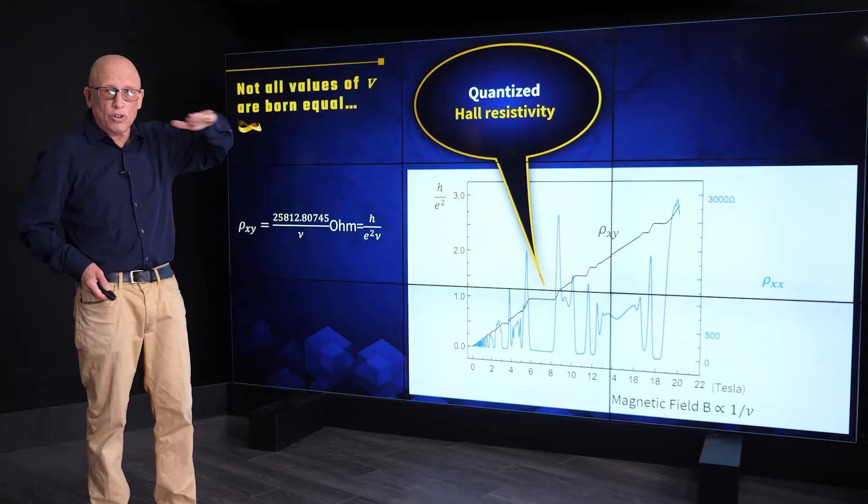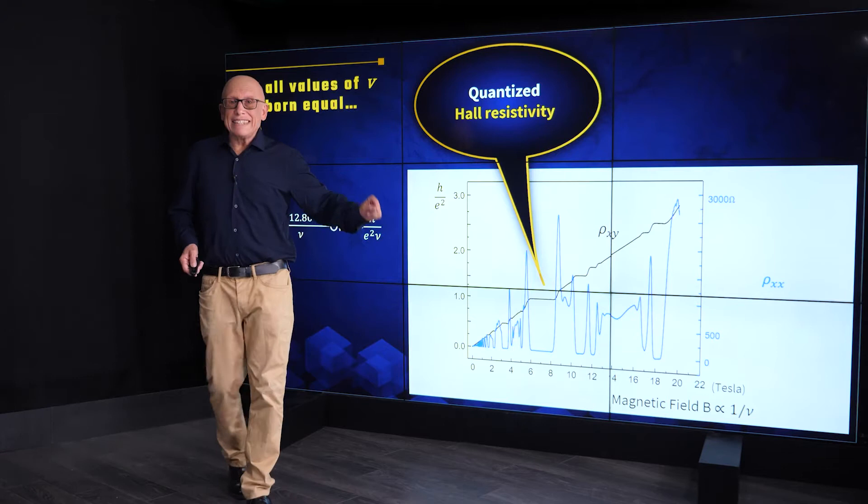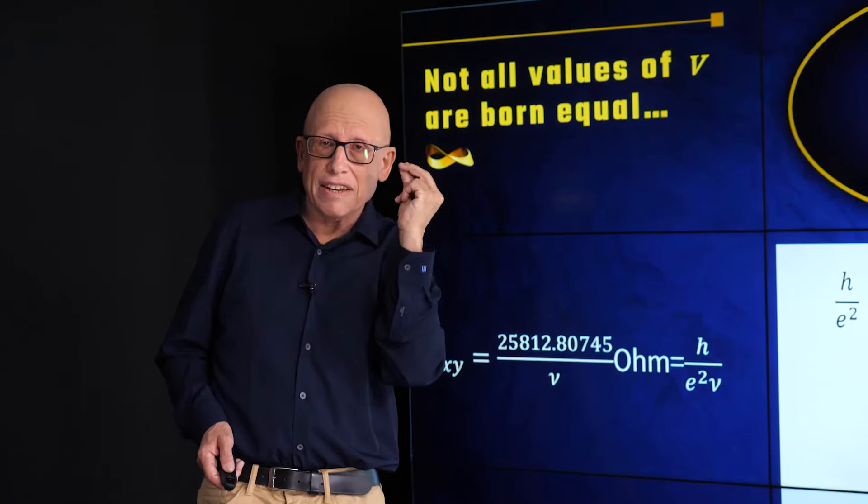Now, what's the value at which it is stuck? What is the constant value? Well, those values, look here. What we see here in this main plateau, rho xy is exactly h over e squared. Now, that's mind-boggling. It's a resistivity.